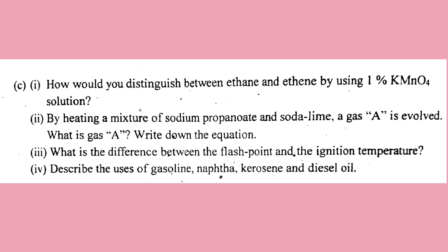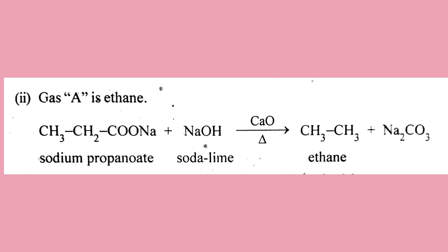Sodium propanoate with soda lime (NaOH/CaO) on heating: CH3CH2COONa plus NaOH with CaO heat gives CH3CH3 (ethane gas) plus Na2CO3. A gas, ethane, is produced.